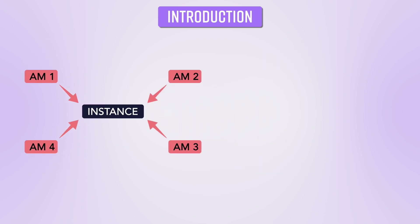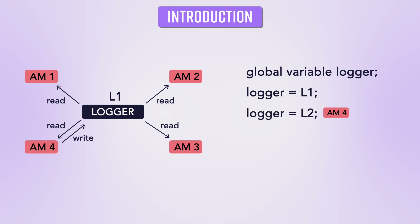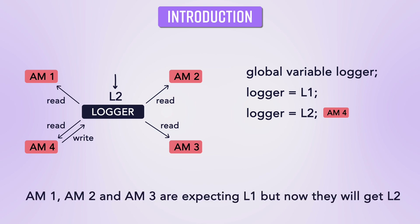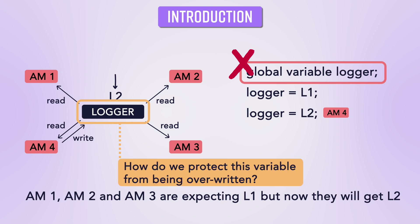Let's say we do that — we save the logger instance in a global variable and allow different application modules to read it. It is fine as long as they are only reading that variable. But what if one particular module tries to write over it or override it? In that case, the value gets changed, and now that same value is no longer consistent. Since it's a global variable, it can be overwritten or modified — that's why we cannot use a global variable.